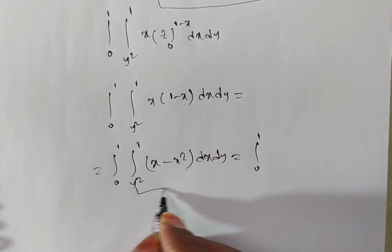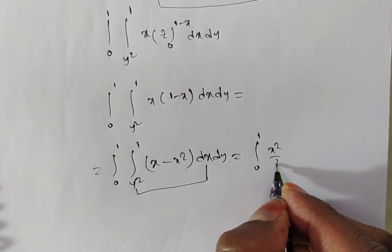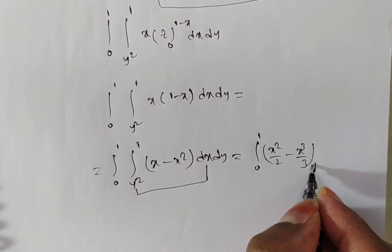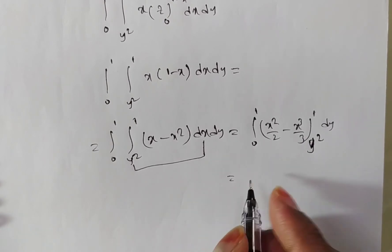integral 0 to 1. Here you have a first dx only, now that is y. Now x integration, x square by 2 minus x square integration, x cube by 3. Limits from y square to 1 into dy.